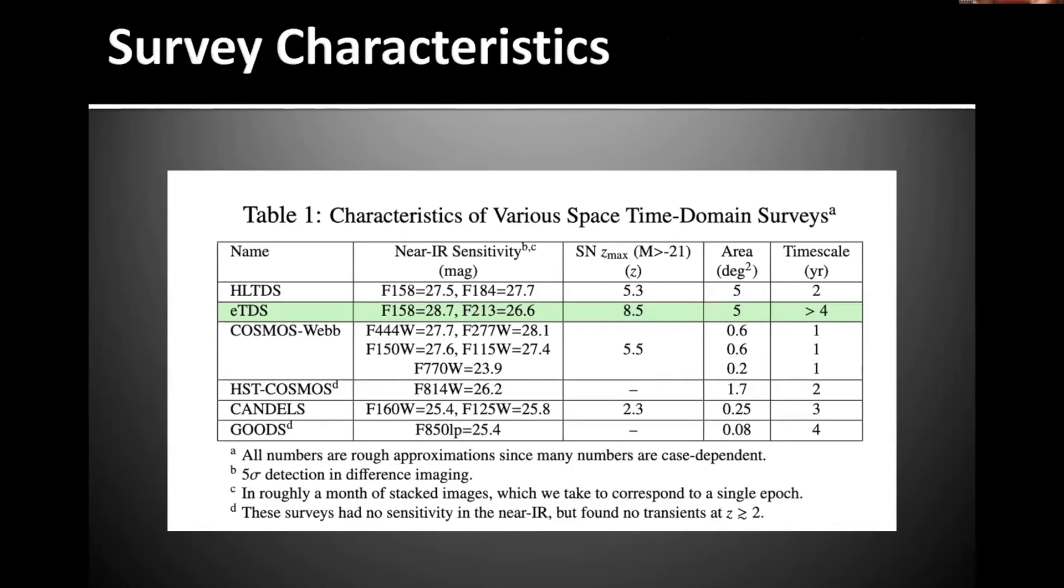Right off the bat, here's what it looks like. Here are the properties compared to other large-scale, wide-field space telescope surveys, including the Roman High Latitude Time Domain Survey on the top, Cosmos Web right below it, and then some of the HST surveys.